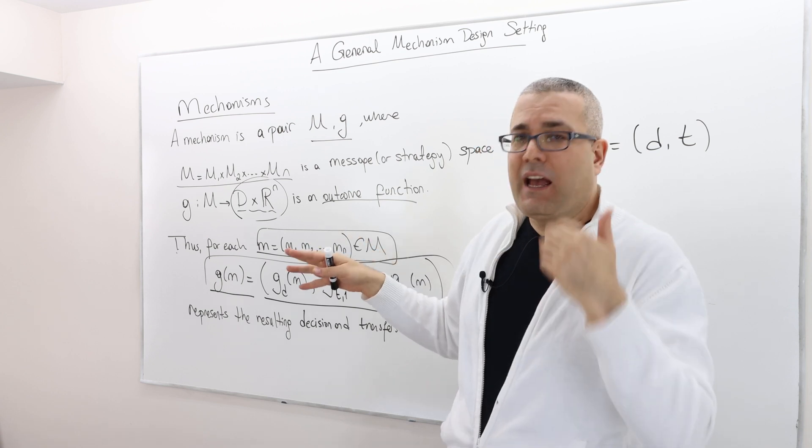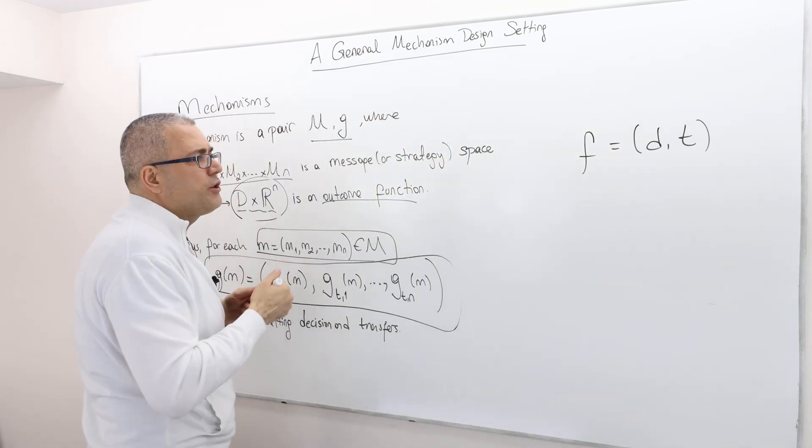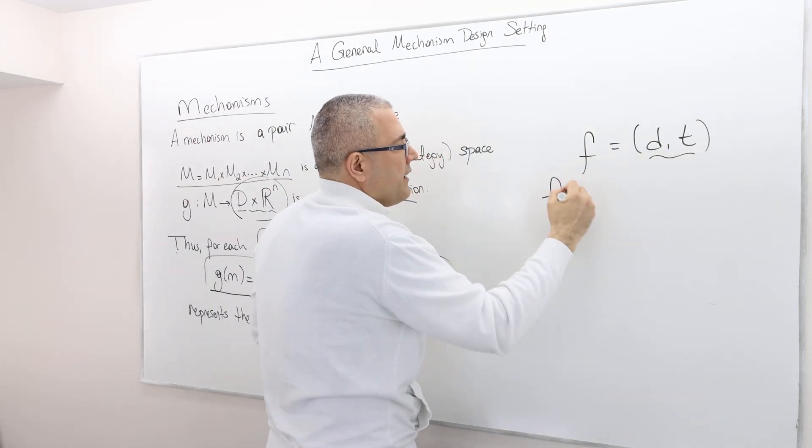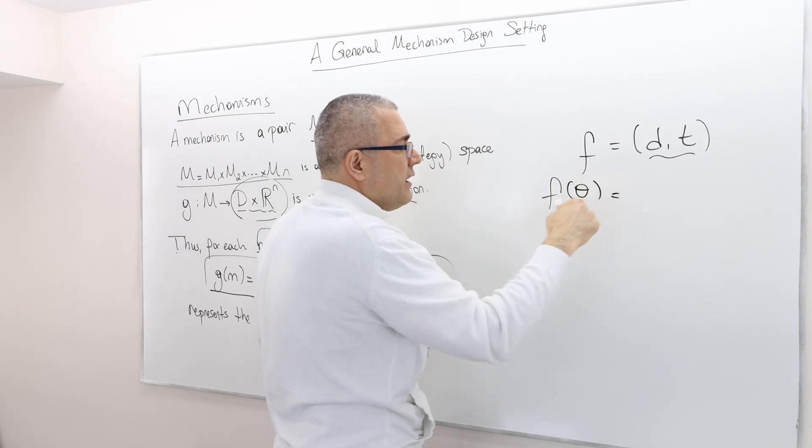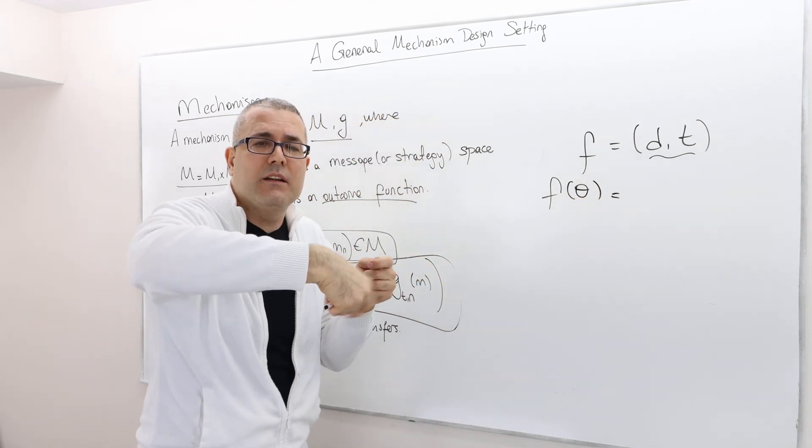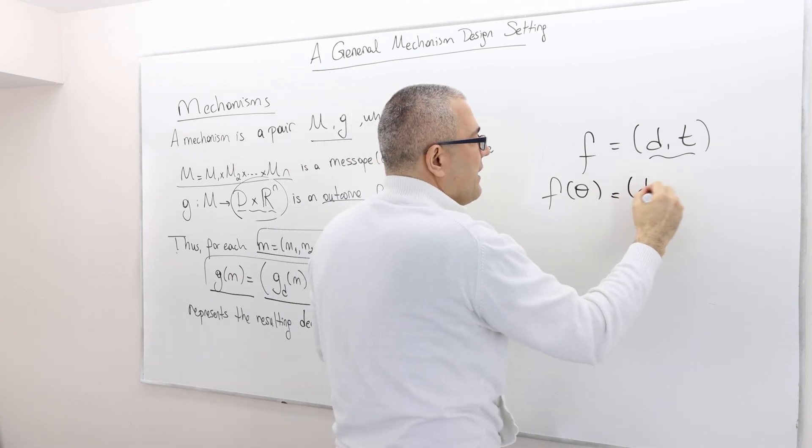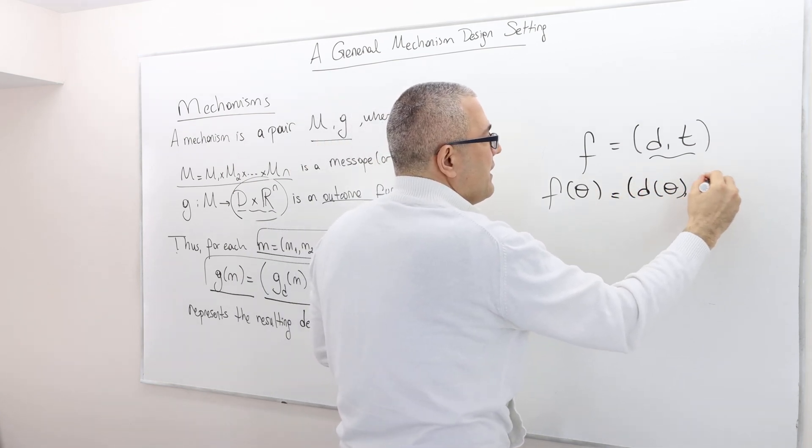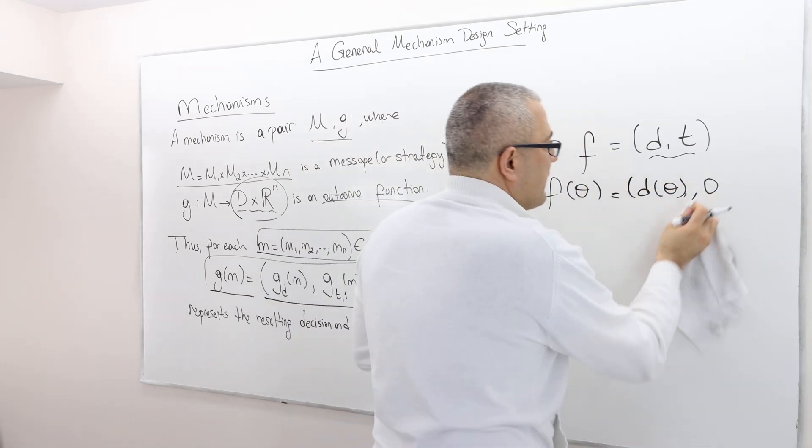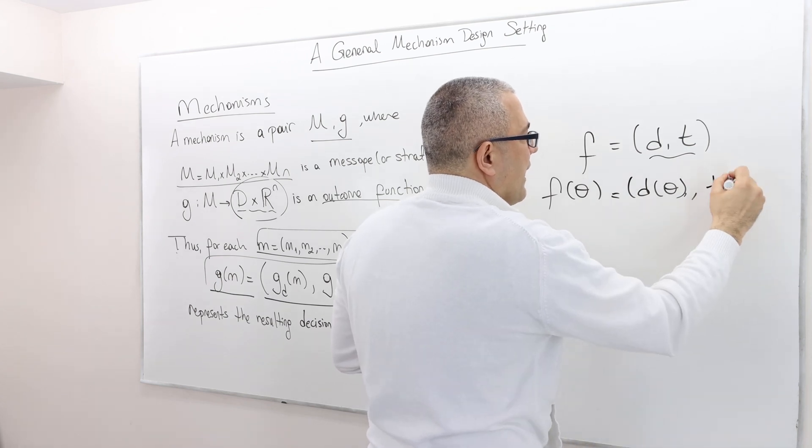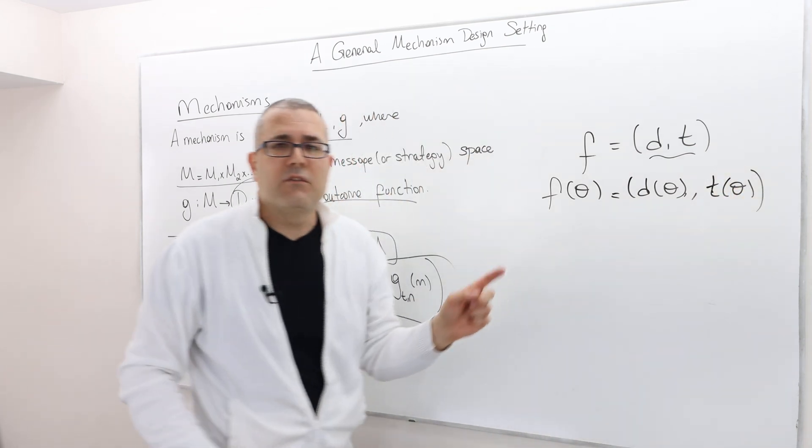Okay. So, but again, remember the social choice function, we said social choice function looks at theta, the declared types. And then given the declared types, I'm sorry, it calculates the social decision and then the transfer, right?